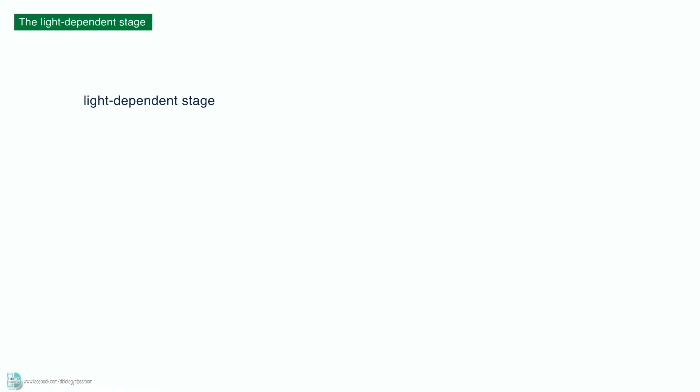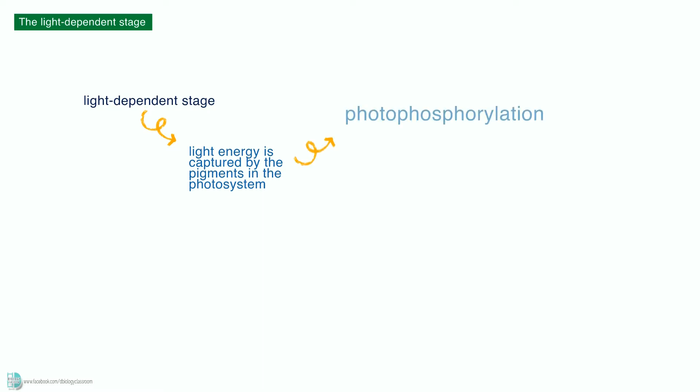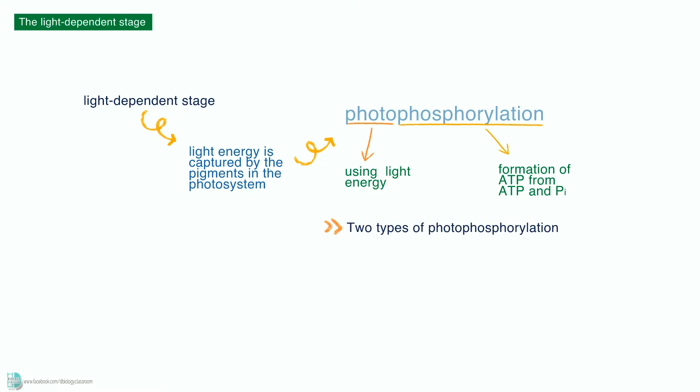The light-dependent stage happens when light energy is captured by the pigments in the photosystem and photophosphorylation occurs. Photophosphorylation means the formation of ATP from ADP and inorganic phosphate by using light energy. There are two types of photophosphorylation: cyclic photophosphorylation and non-cyclic photophosphorylation.